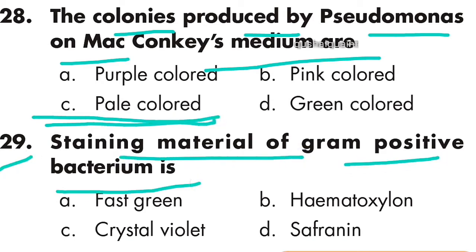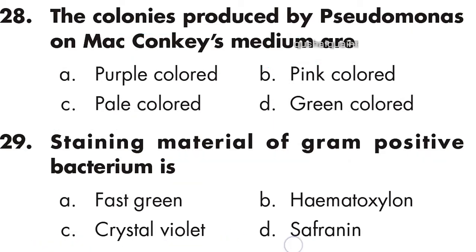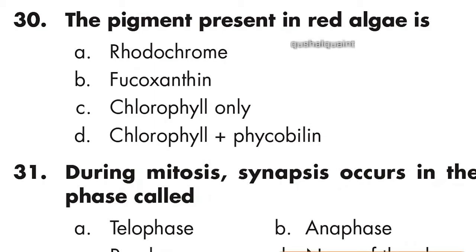Question 29: The staining material of gram-positive bacterium is crystal violet — option C is correct.